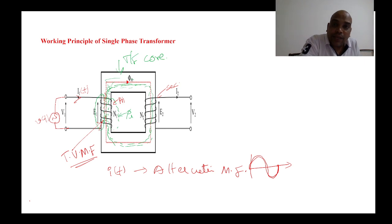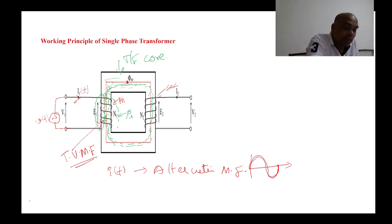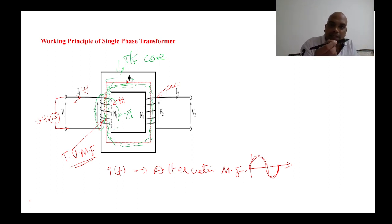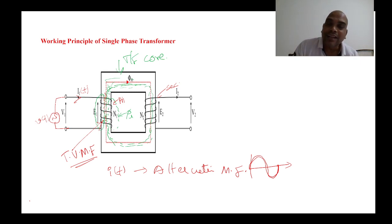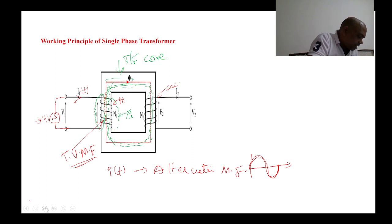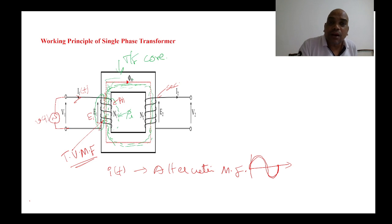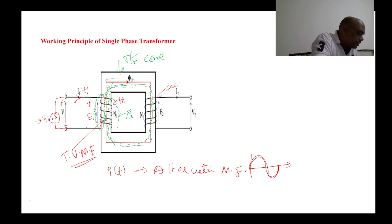Whenever the alternating magnetic flux cuts the stationary conductor, an EMF is induced in the coil. The conductor is stationary, but the flux cutting it is alternating and time-varying. This time-varying magnetic field cutting the conductor causes EMF to be induced. That EMF is E1. The induced EMF always opposes the applied voltage according to Lenz's law.